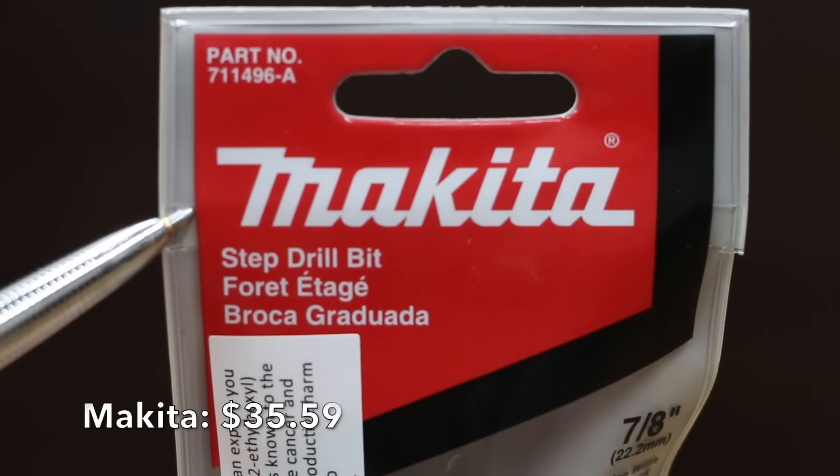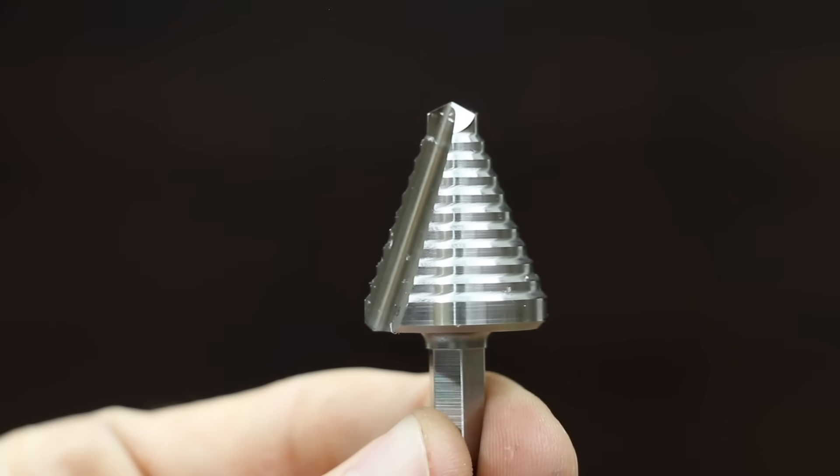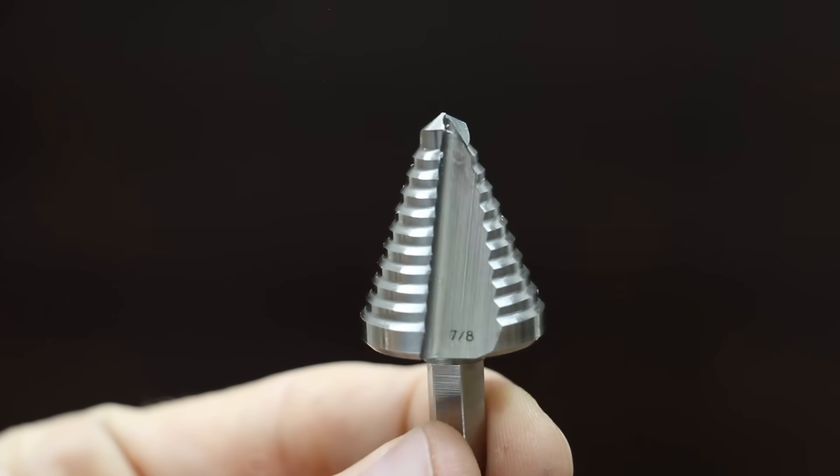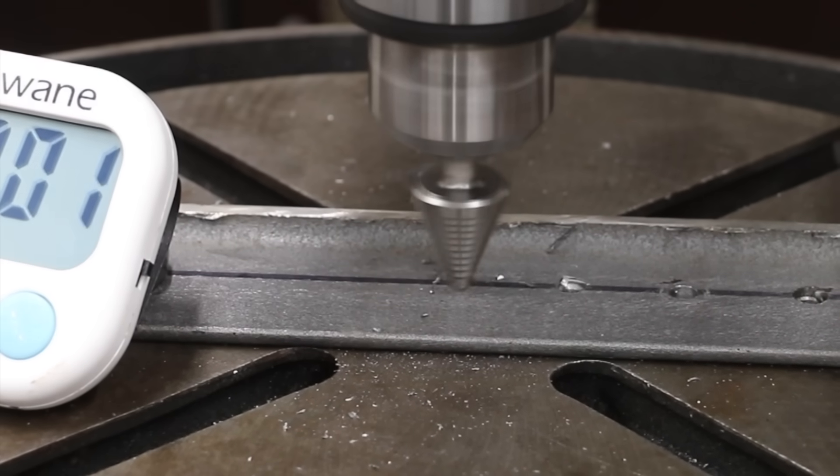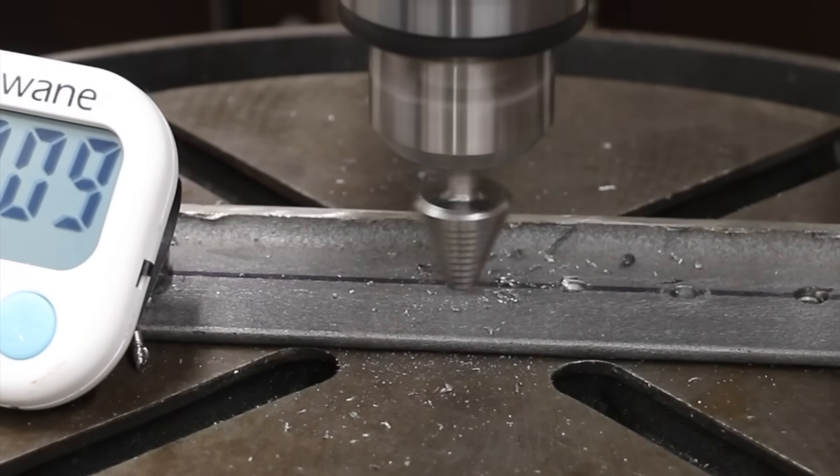The Makita costs $35.59 and claims to be a self-starter. It also claims to deburr holes with the next cutting edge. It's about one half the length of the competition and is only designed for thin material. Made in Switzerland. The Makita cut through the mild steel like a hot knife through butter in right at 10 seconds, taking the lead from Teemo.